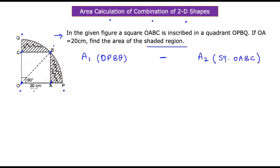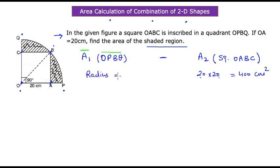The area of the square is simple to calculate since we know the side length: 20 × 20 = 400 centimeters squared. Now I need to calculate the quadrant area A1. However, we are not given the radius of the circle containing this quadrant, so let's call it r.